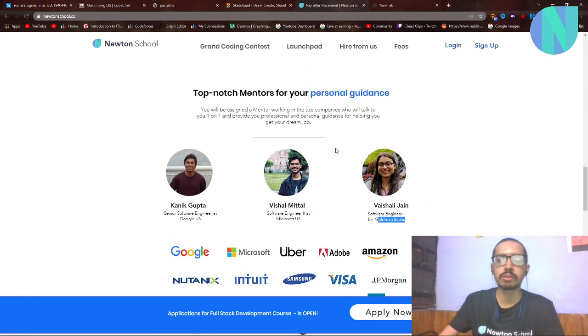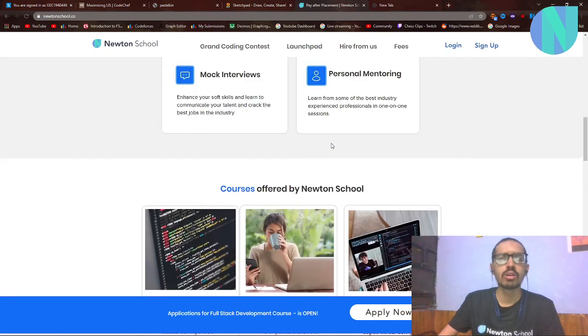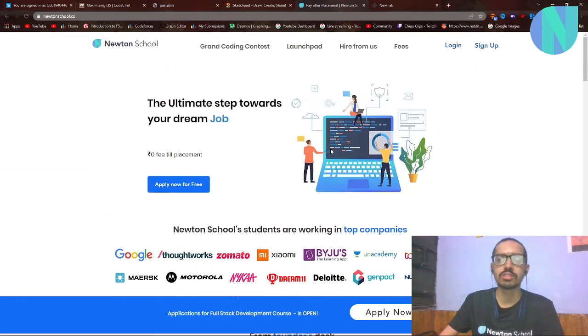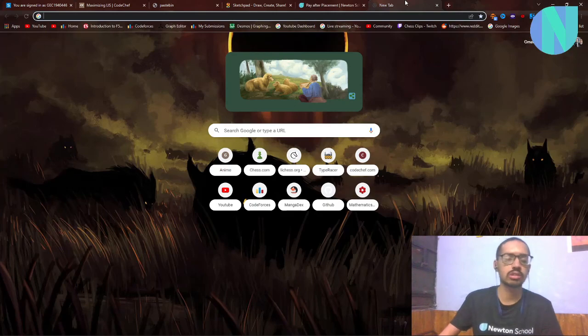Also, all the mentors are from top MNCs like Google, Microsoft, Goldman Sachs. So you can be assured that you are being mentored by some of the best software developers in the world. You don't need any prior coding knowledge to sign up for this. Just come to the website, sign up, and they will ask you a normal aptitude test. This is a very good chance if you want to get placed into your dream companies. If you want to sign up, just go to the Newton School website. And this was it for this video guys. I will upload more editorials in the future. Like, comment and subscribe. Thank you for watching. Bye!